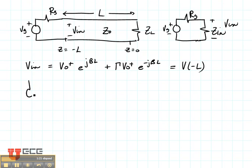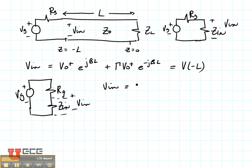If you have voltage VG being split across two impedances, RG and Z_in, you can find the voltage across Z_in using a voltage divider. V_in equals VG times Z_in over (Z_in plus RG). That's just using a voltage divider.